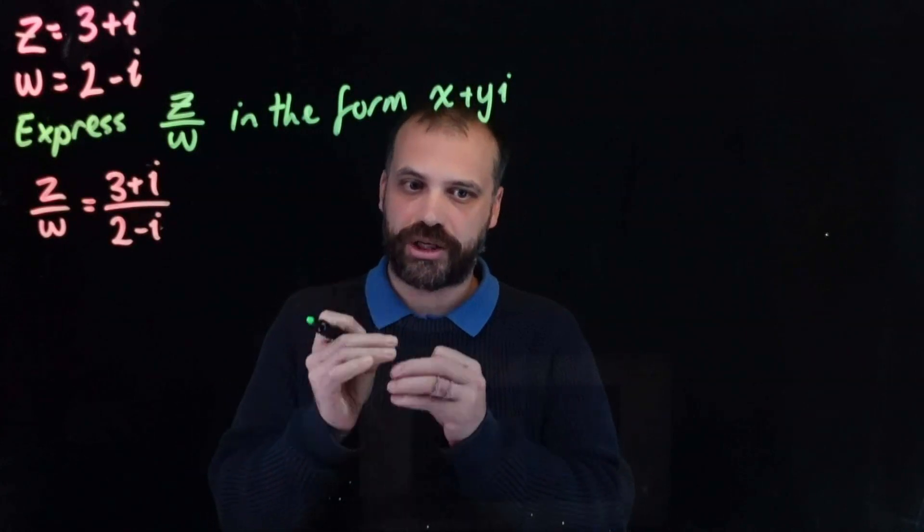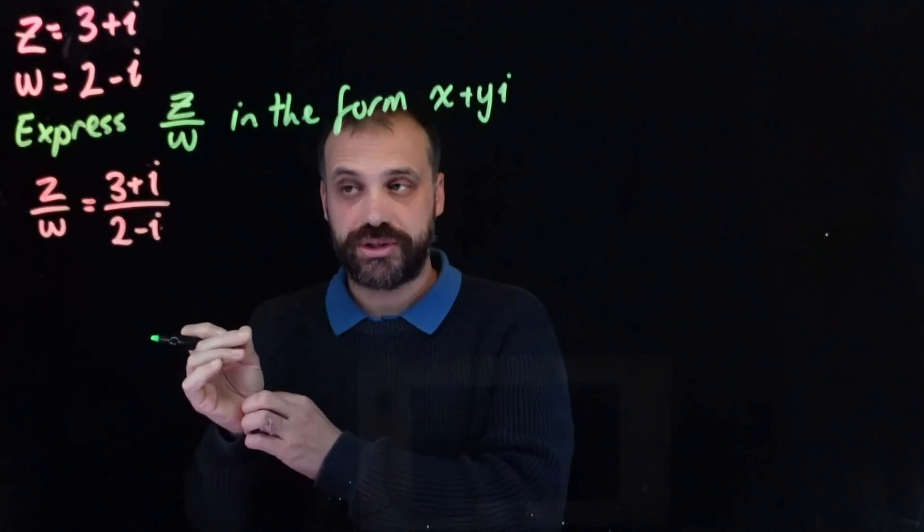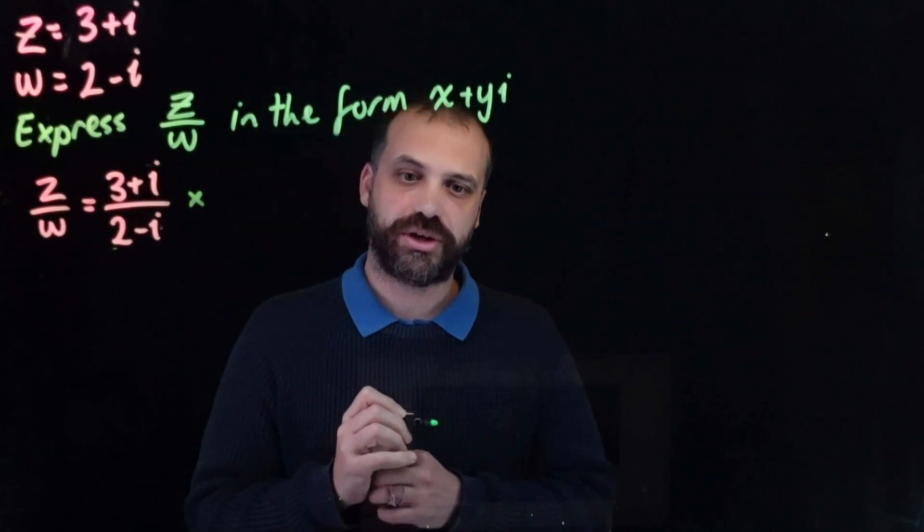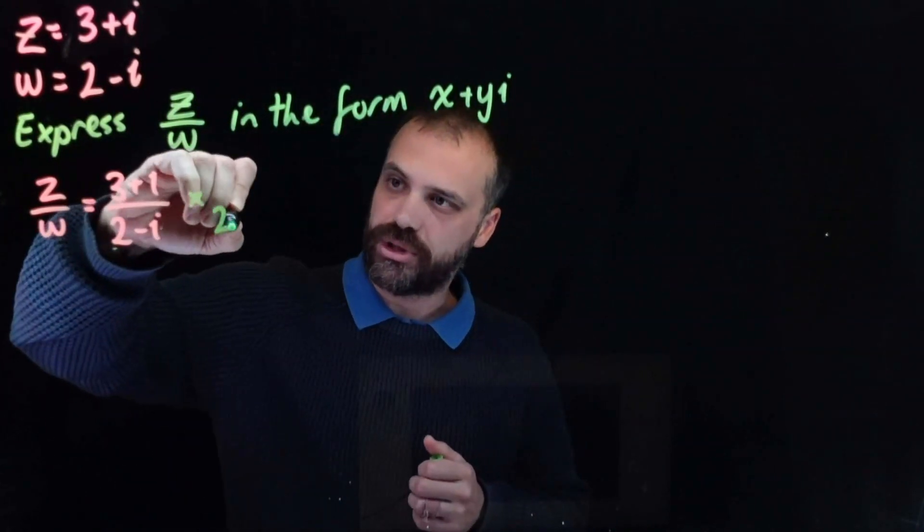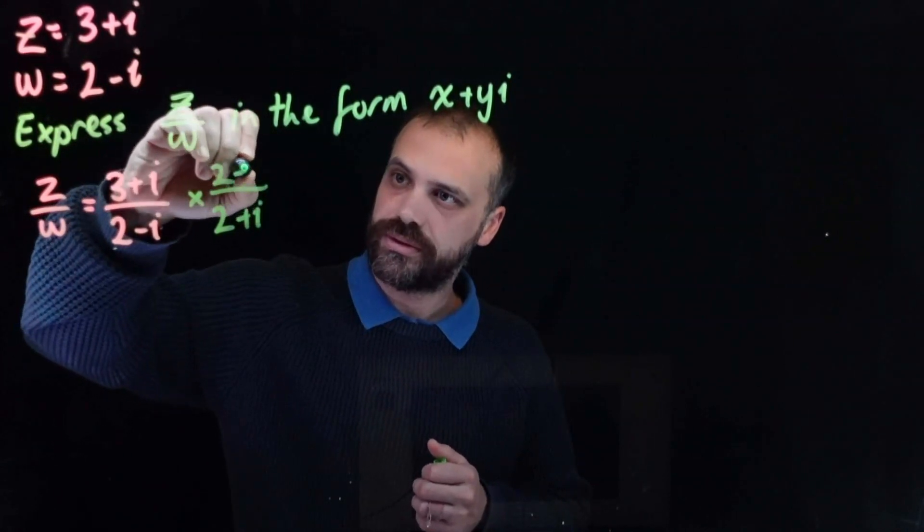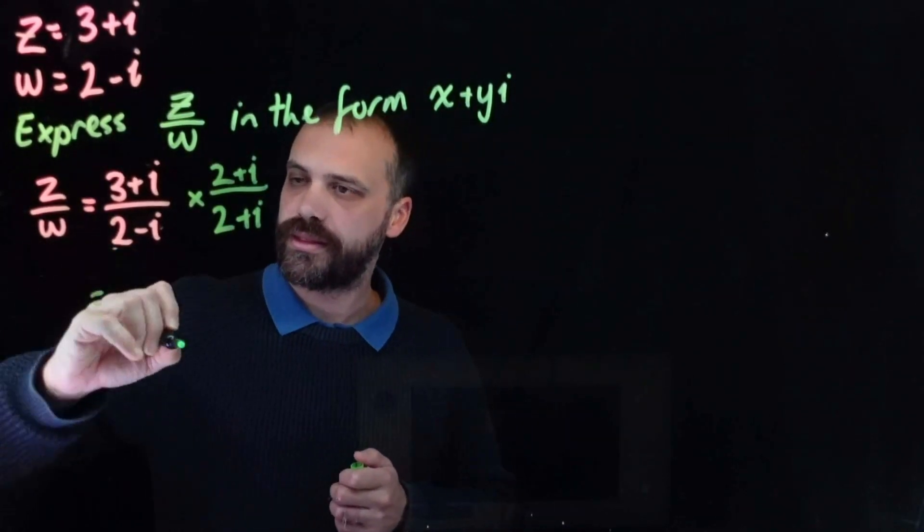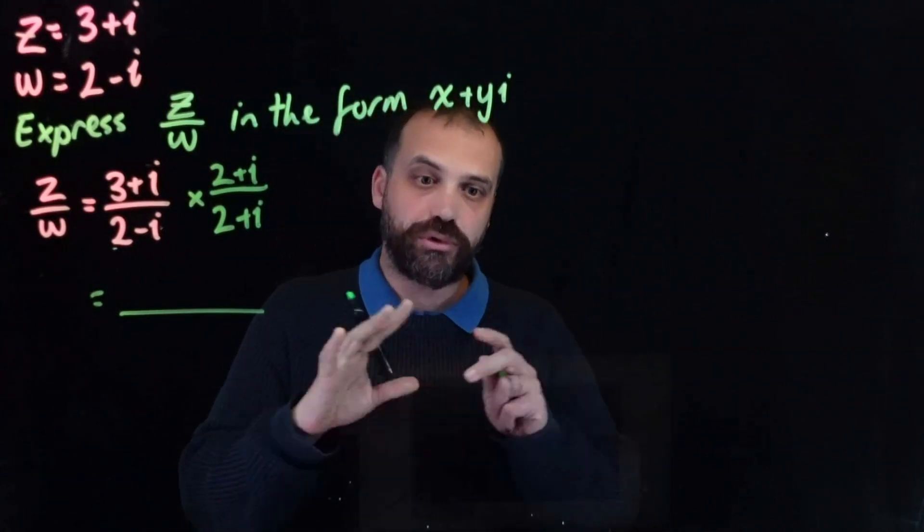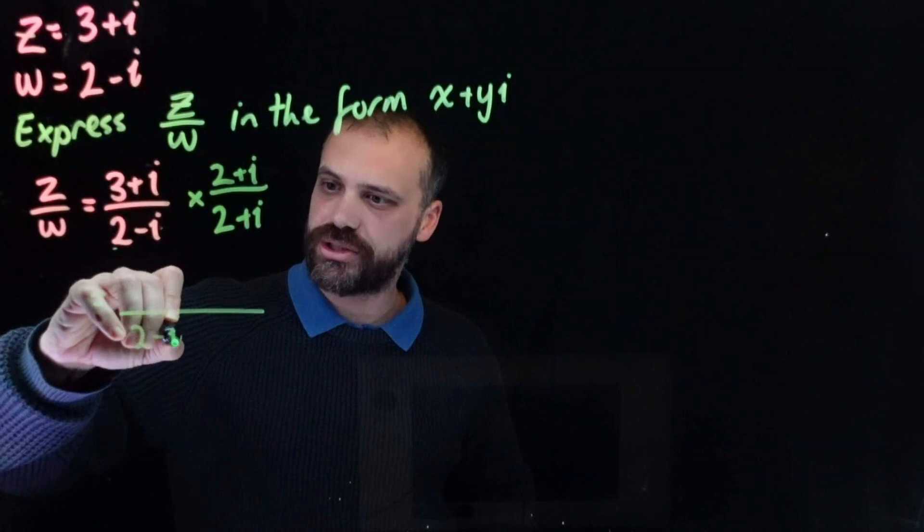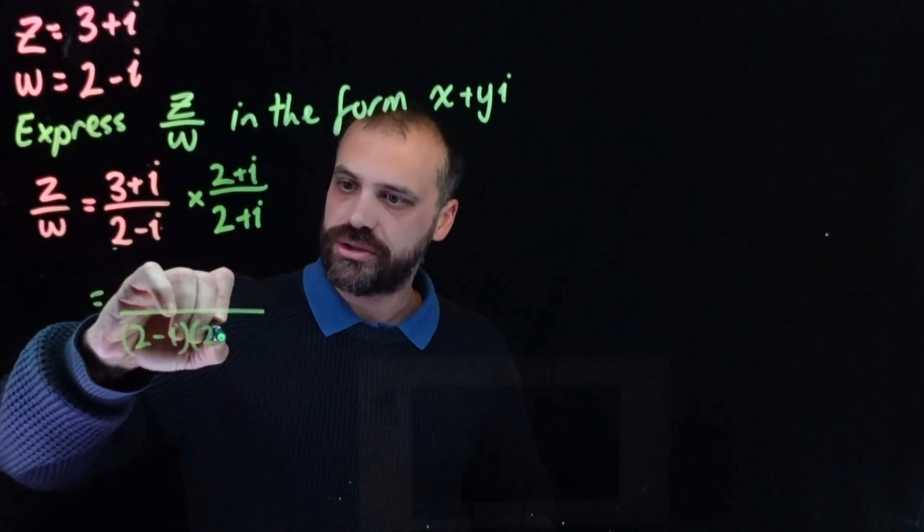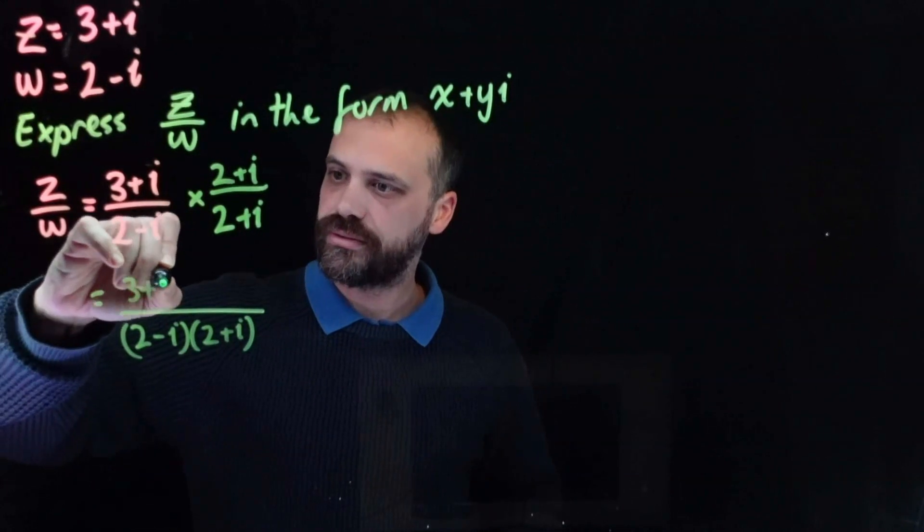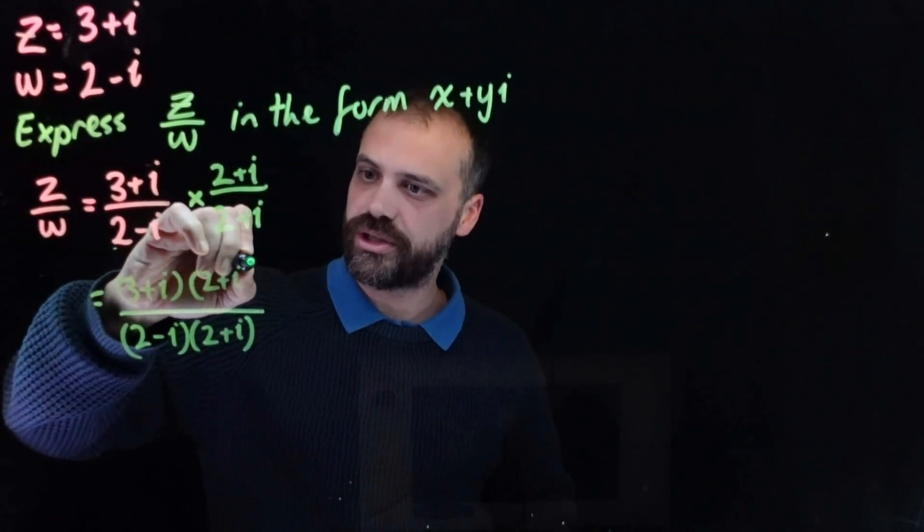Same process as when we were rationalizing denominators with surds. We're going to multiply the top and the bottom by the conjugate of the denominator. So multiply top and bottom by 2 plus i. Now I'm going to write that out because I don't want to make a mistake here. So I'm going to write 2 minus i times 2 plus i and 3 plus i times 2 plus i.